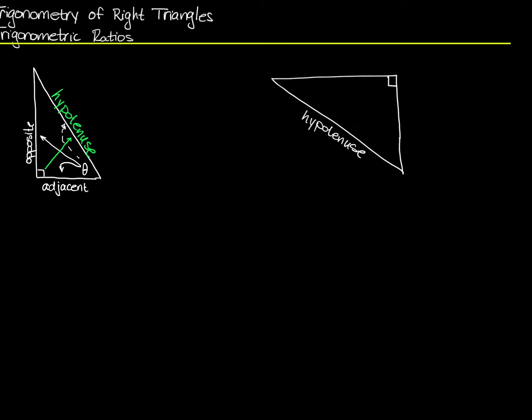Now let's go ahead and label theta. And with that, I can say that this is the side opposite theta. And this is the side next to theta, or adjacent to theta.